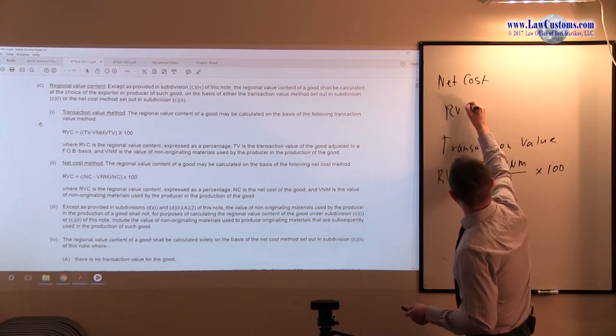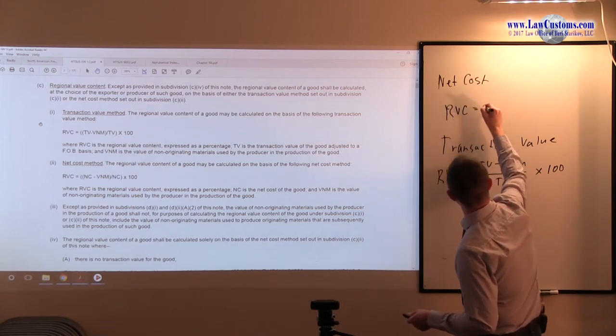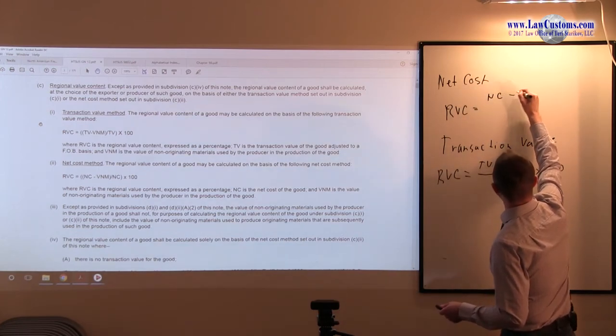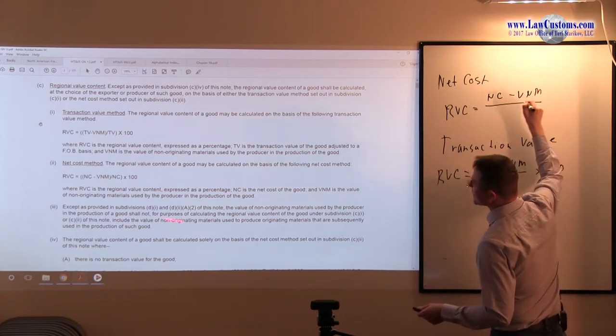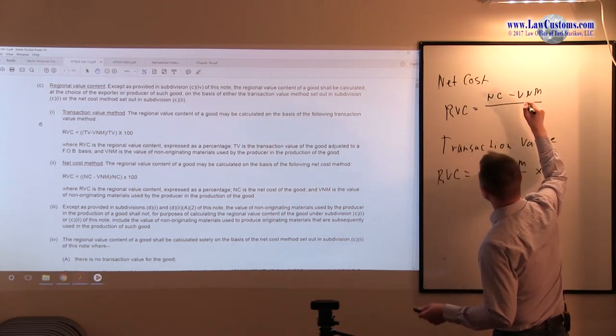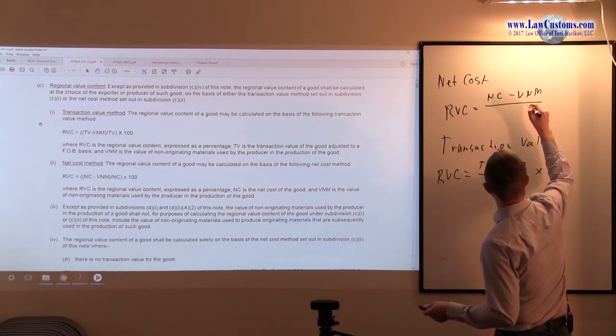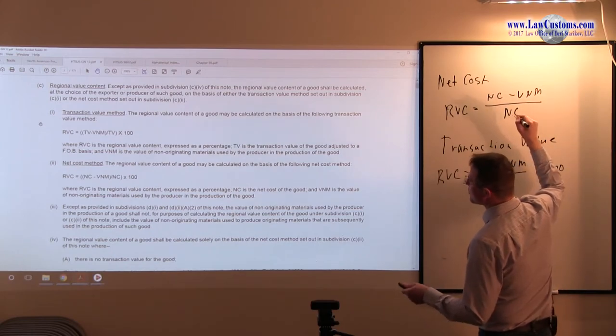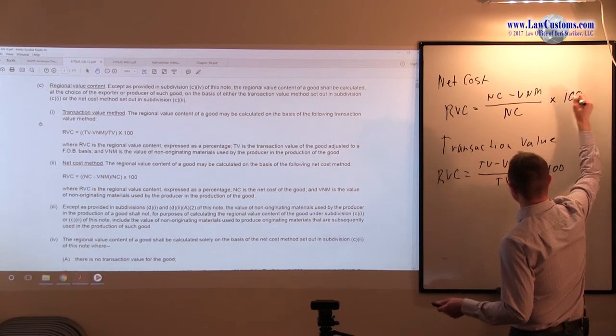Here, regional value content under the net cost method is calculated: you take the net cost of the product, you subtract the value of non-originating materials, then again you divide by net cost, just like you divide by transaction value here. And of course, to get the percentages straight, you multiply this stuff by 100.